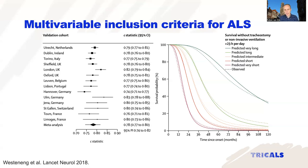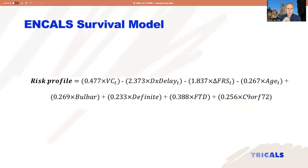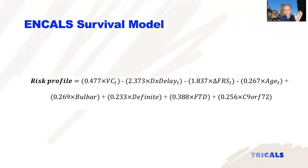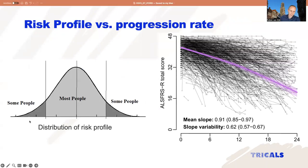This is how the formula looks: it is based on eight different patient factors — vital capacity, diagnostic delay, pre-diagnostic progression rates of the delta-FRS, site of symptom onset, certainty of diagnosis, symptoms of frontotemporal dementia, and genetic factors. For every patient we can make a risk profile, and based on that risk profile we try to select the patient for the clinical trial. For the entire population you get a distribution where people on the right-hand tail hopefully reflect fast-progressing patients, and people on the left-hand tail hopefully reflect slow-progressing patients.